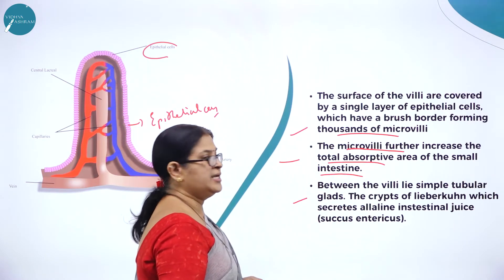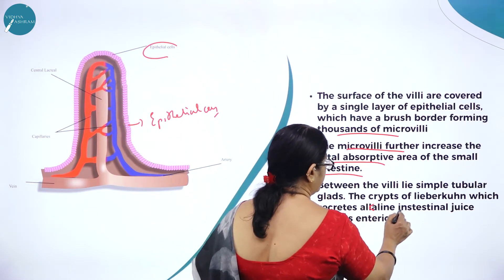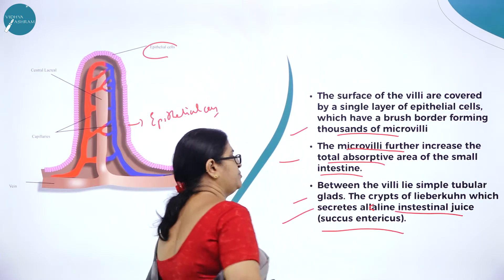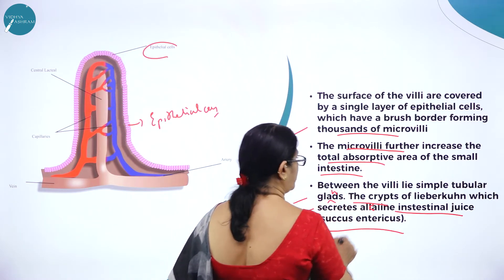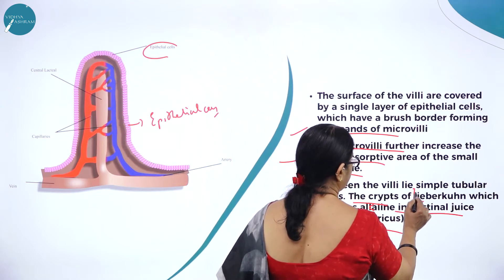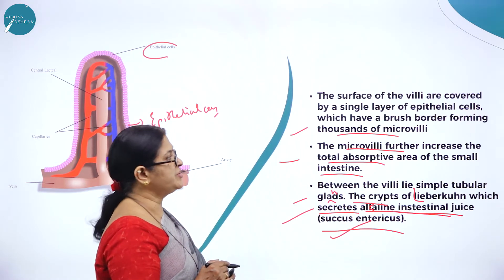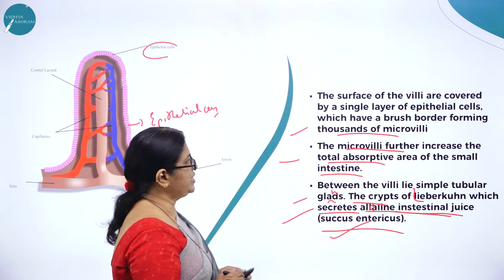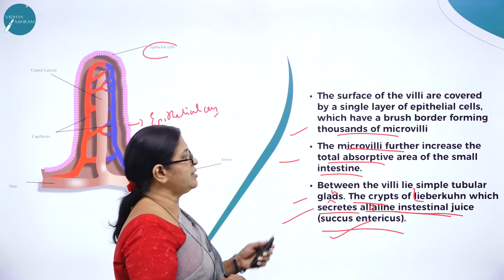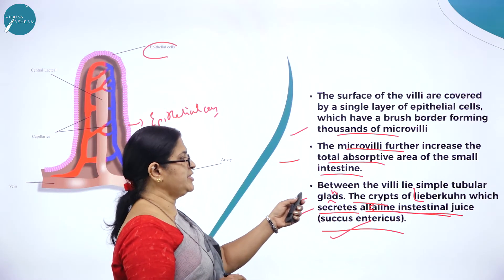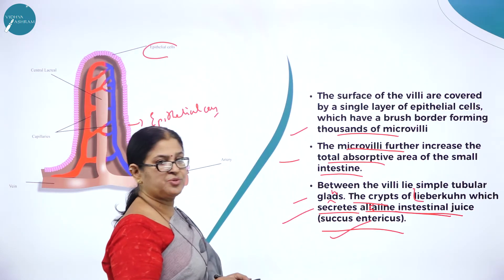Between the villi lie simple tubular glands called the Crypts of Lieberkühn, which secrete an alkaline intestinal juice called succus entericus. The microvilli further increase the total absorptive area of the small intestine. Between the villi lie simple tubular glands called the Crypts of Lieberkühn, which secrete alkaline intestinal juice called succus entericus.